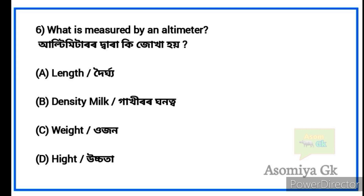Next question: What is measured by an altimeter? An altimeter measures the height or altitude — the distance between higher elevations.